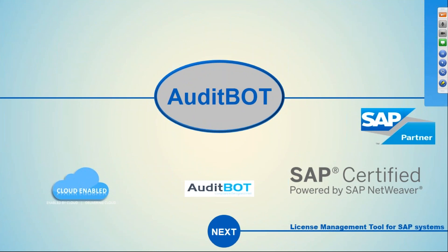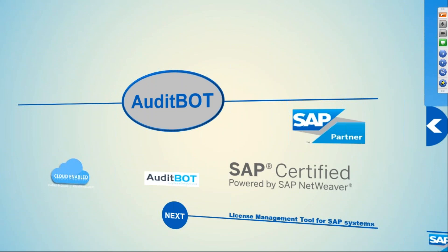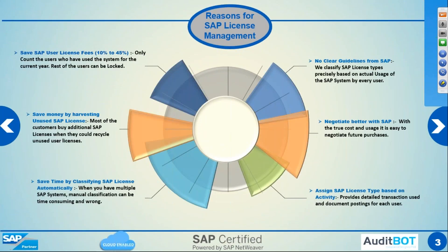We are a partner with a company called Audibots. So why do we need to do license optimization? One of the key things we found in most clients is we were able to save them at least 10 to 45 percent on the license count. We can also harvest unused licenses, which basically means people who are not using the system to the fullest potential. We also save time by automating the use of license classification. SAP does not provide clear guidelines on what transactions are mapped to what license types, so it is very tough for customers to figure out what license type needs to be assigned to what users.